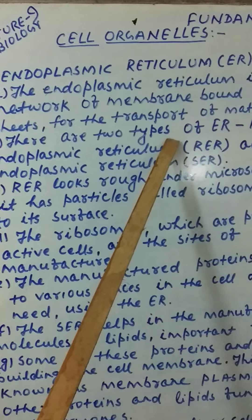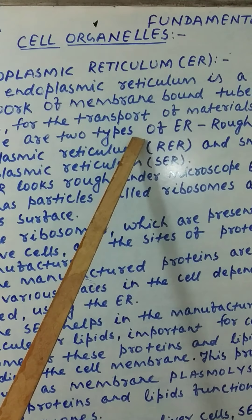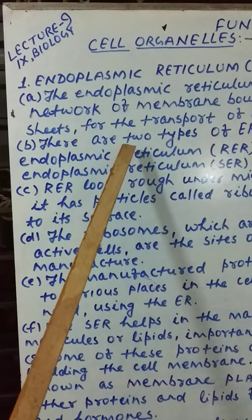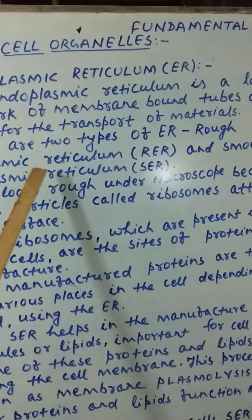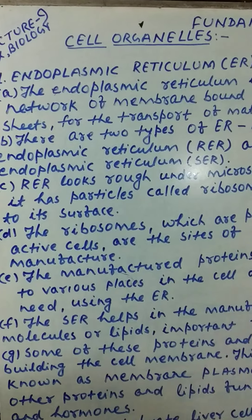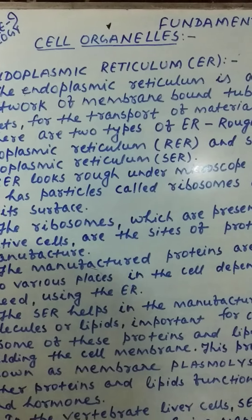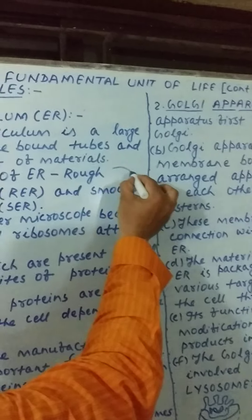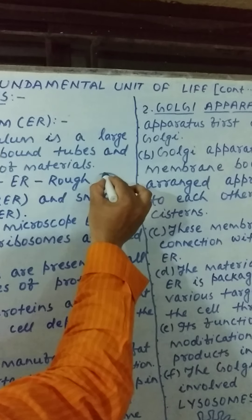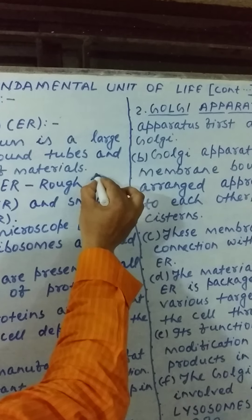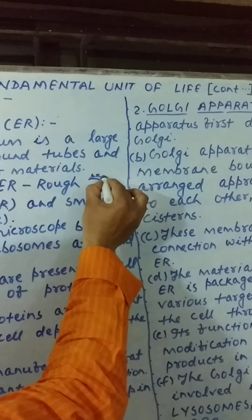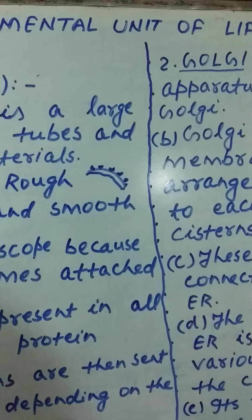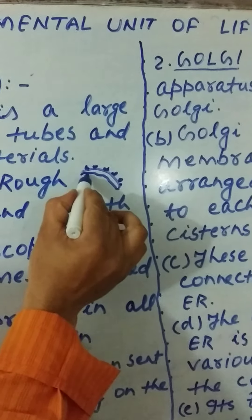There are two types of endoplasmic reticulum: rough endoplasmic reticulum and smooth endoplasmic reticulum. Whenever we talk about rough endoplasmic reticulum, if ribosomes are present on the membrane of the endoplasmic reticulum, it is called rough endoplasmic reticulum.